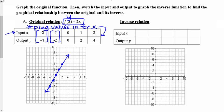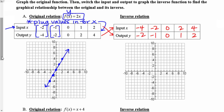My next step is to switch the x's and the y's. I take the table I just used and write the x's in the y column and the y's in the x column. So the new x's are: negative 4, negative 2, 0, 2, 4, and the new y's are: negative 2, negative 1, 0, 1, 2. Now I graph these new points: negative 4 comma negative 2, negative 2 comma negative 1, 0 comma 0, 2 comma 1, 4 comma 2. All I did was flip the x's and the y's and graph those new points — that's the inverse relation.